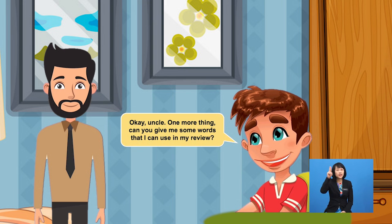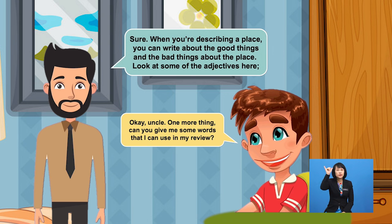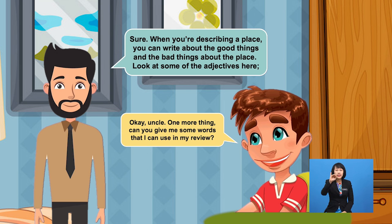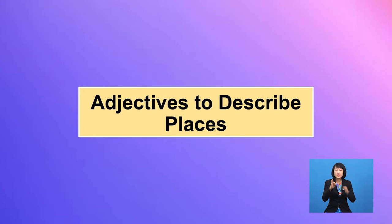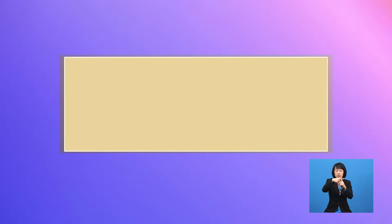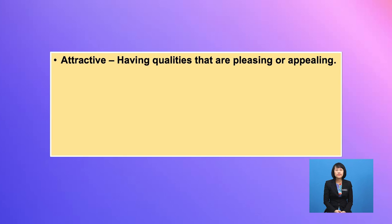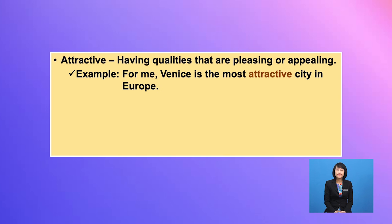Can you give me some words I can use in my review? Sure Yusuf. When you are describing a place, you can write about the good things and the bad things. Look at some adjectives. If you want to describe something positive, you can use 'attractive' — having qualities that are pleasing or appealing. For example: 'Venice is the most attractive city in Europe.'